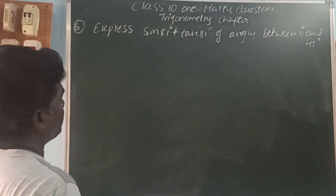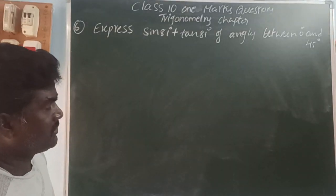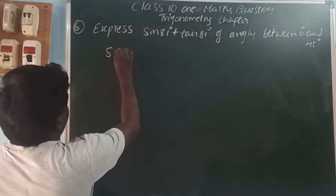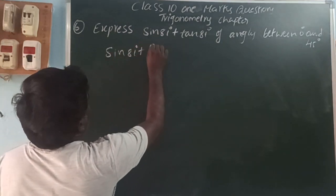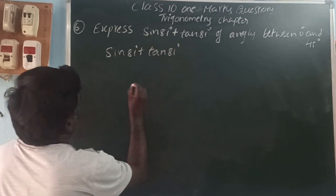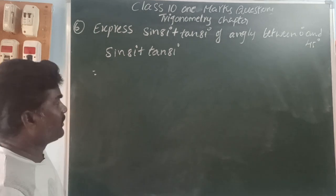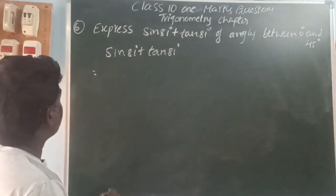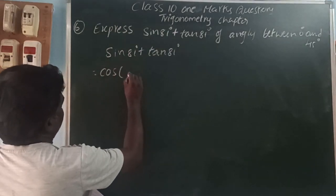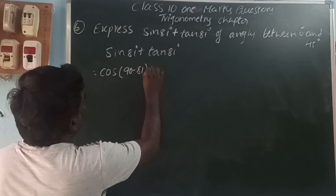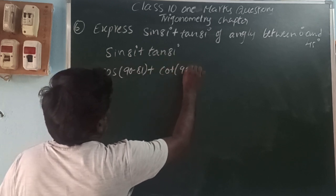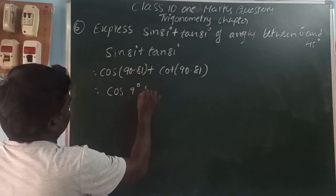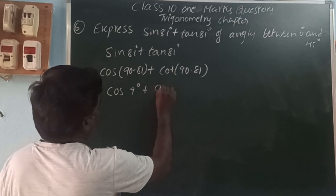Next: express sin 81° plus tan 81° by changing into trigonometric ratios with angles between 0 and 45 degrees. Using complementary angles, sin changes to cos and tan changes to cot. So sin 81° becomes cos of 90 minus 81, which is cos 9°, and tan 81° becomes cot of 90 minus 81, which is cot 9°. So the answer is cos 9° plus cot 9°.